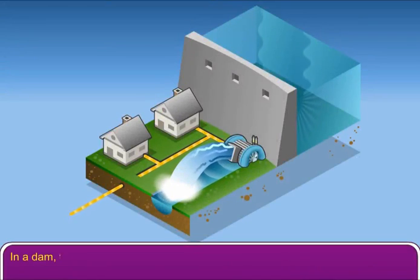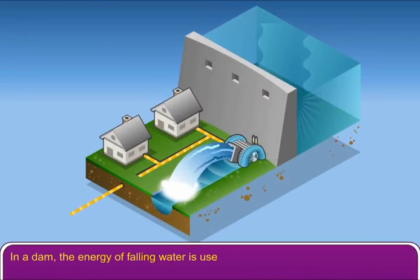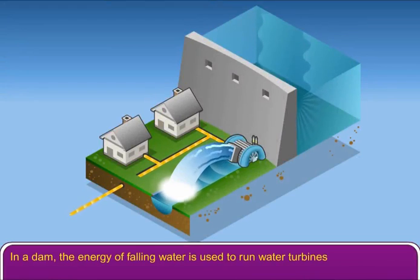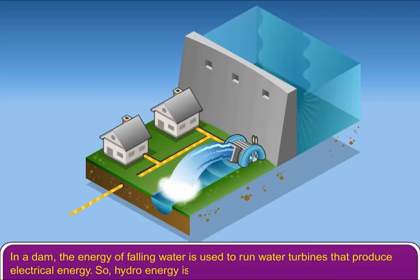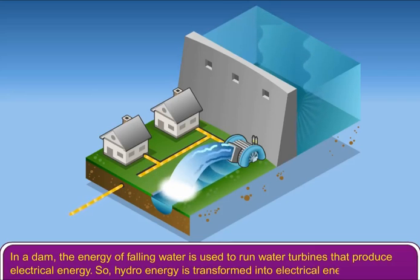In a dam, the energy of falling water is used to run water turbines that produce electrical energy. So, hydro energy is transformed into electrical energy.